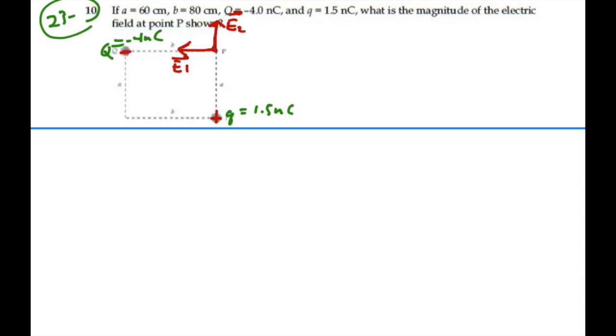Let's find the magnitude of those fields next. If we're looking at field E1, the magnitude of that field is going to be equal to K big Q over R squared, which would be 9 times 10 to the 9, times 4 nanocoulombs. I left the minus sign out because I already got the direction with my vector.